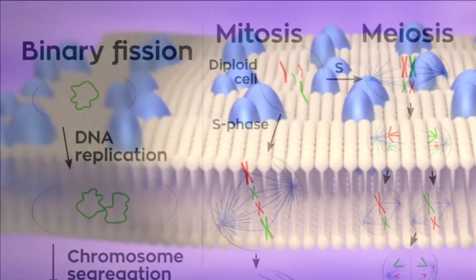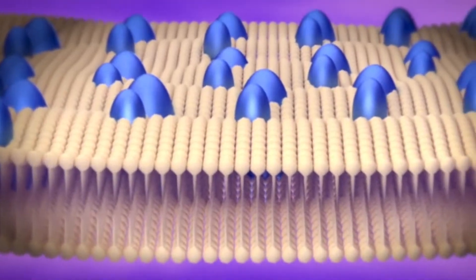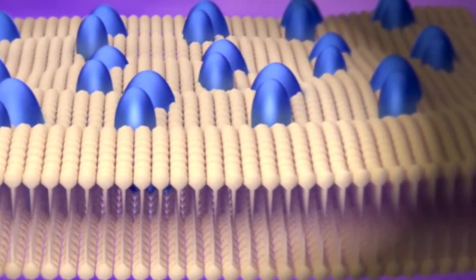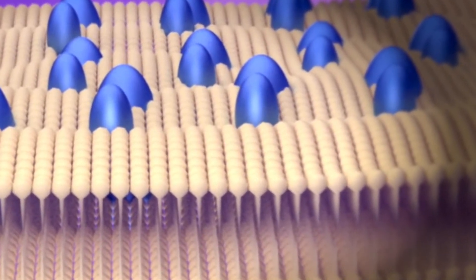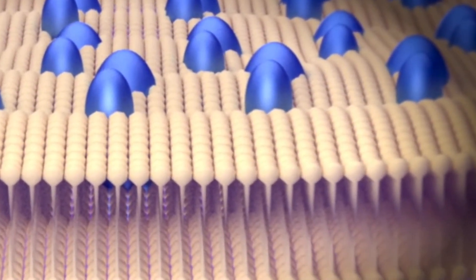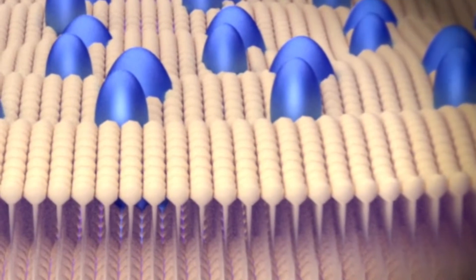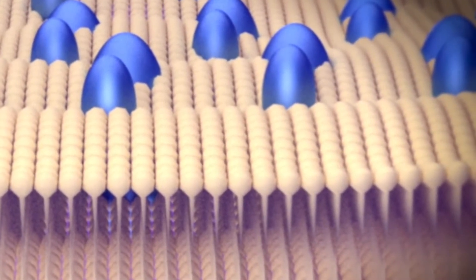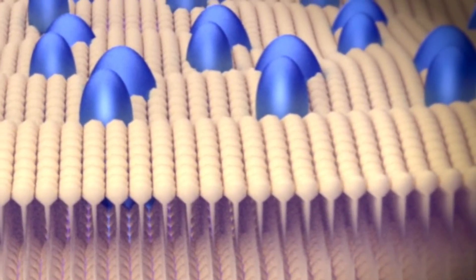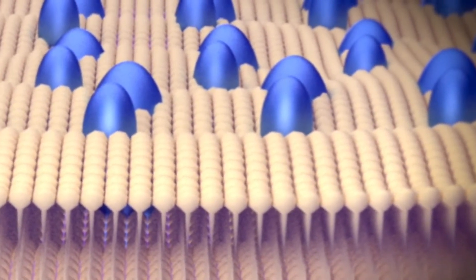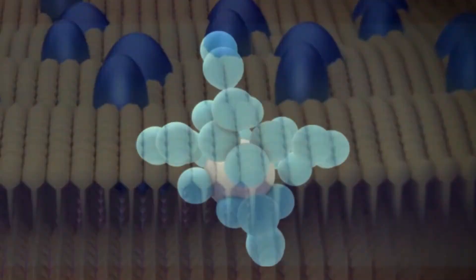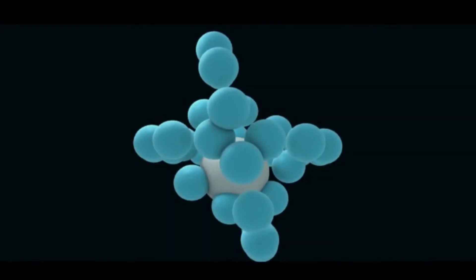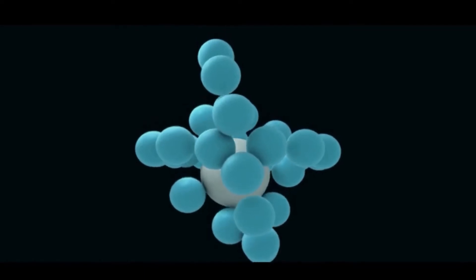What do you think Leeuwenhoek saw in the plaque? He saw tiny living things with a single cell that he named animalcules. Today, we call Leeuwenhoek's animalcules bacteria.